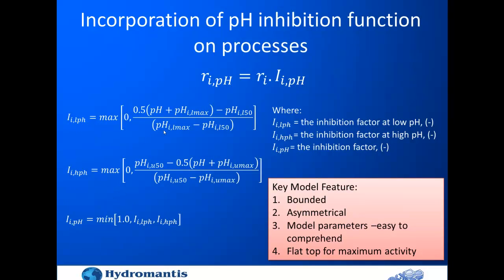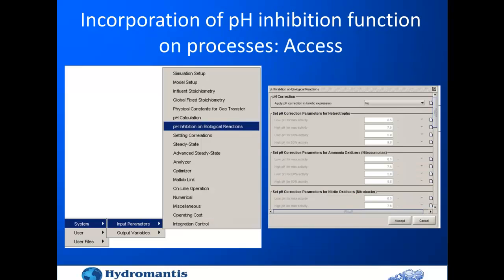Mathematically, we estimate the inhibition factor for the lower range, the higher range, and then calculate the overall inhibition factor. The beauty of this approach is that it is a bounded, asymmetrical function — you can have different shapes on the lower and higher pH sides. The model parameters are easy to comprehend, and there is a flat top for maximum activity.